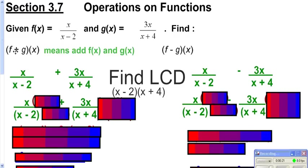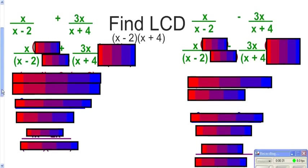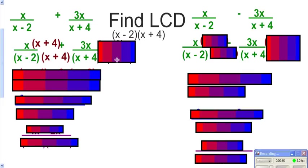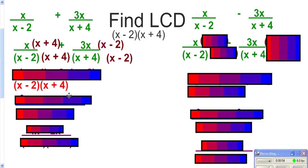f plus g of x really just means you want to take your f and your g and add them together. You should remember that to add fractions you need to have a common denominator. In this case our common denominator is just the two denominators multiplied together. So the first fraction needs an x plus 4 on the bottom, and therefore on the top as well, because whatever you do to the bottom you have to do to the top. Similarly, we need an x minus 2 on the bottom and an x minus 2 on the top. Then we can write it as one fraction all over our common denominator.